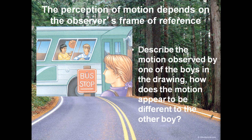The perception of motion depends on the observer's frame of reference. It could be different for different people. Try to think about and describe the motion observed by one of the boys in the drawing. How does the motion appear to be different to the other boy? One boy is facing forward. This guy, he's facing this way. But this guy is looking the other way. How do they see the girl to be moving? It's going to be different for each one.